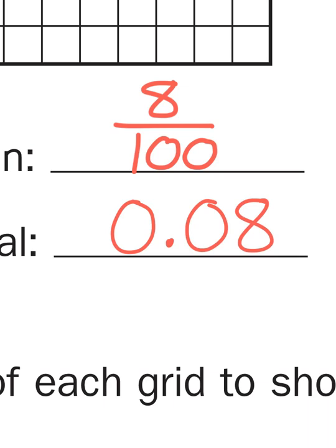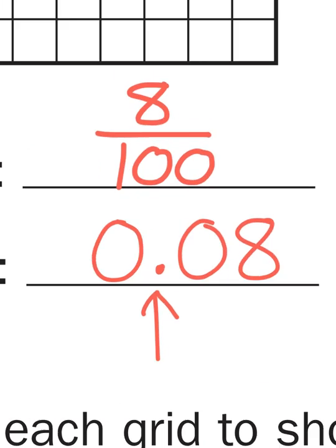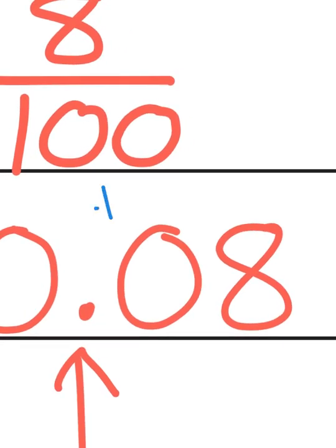Now when we look at decimal forms, you have to remember that the decimal point, this guy right here, tells us that we are dealing with fractions of a whole. Now the zero in between the decimal point and the eight, that is a place value holder, and that represents the place value of tenths, something that we've looked at before.